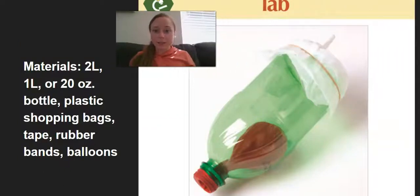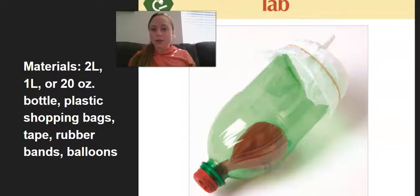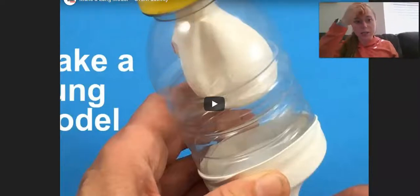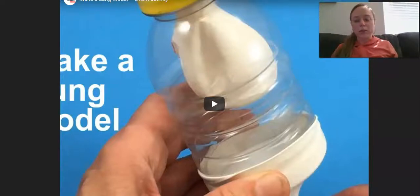All right, you guys get to do a lab today. There's a video coming up that will walk you through exactly how to do this lab. Here are the materials that you will need to have. You will need a plastic water bottle, plastic shopping bags, tape, rubber bands, and two balloons. This will help us to see how a lung inflates and deflates during breathing. You can either choose to watch this video first to see how it's done and then do the activity, or if you don't have the materials, that's okay. You can just watch the video and it will model the same thing for you.